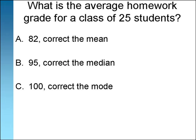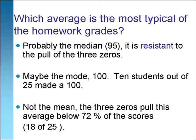If we go back to our question, what is the average homework grade for this class of 25 students? It depends on which measure of average that we use. 82, 95, and 100 are all measures of central tendency or the center of the data or the average. So which average would be the best to report or use?